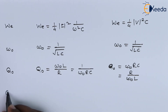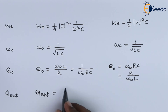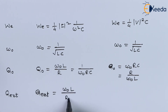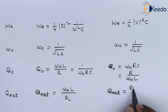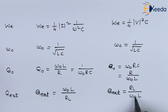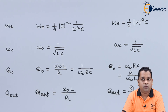For the external quality factor: the series resonant circuit gives Q_EXT = ω0·L/R_L, and the parallel resonant circuit gives Q_EXT = R_L/(ω0·L).